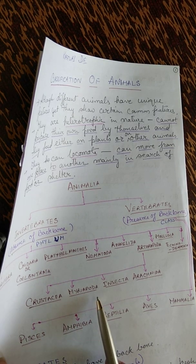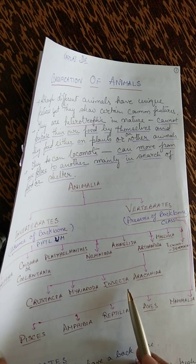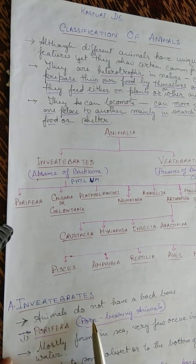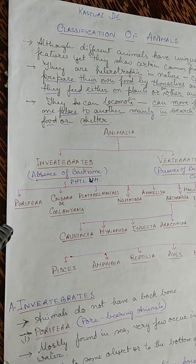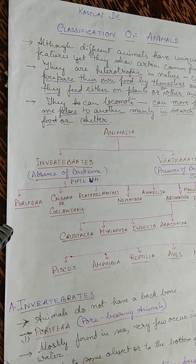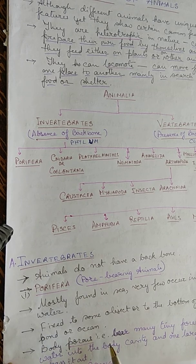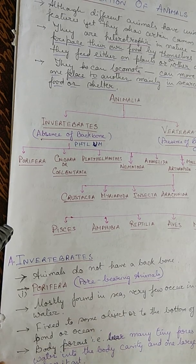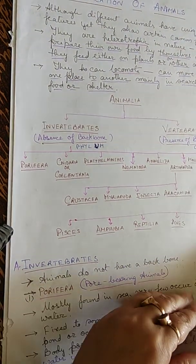The first phylum of invertebrates is Porifera, meaning pore-bearing animals. They are mostly found in the sea; very few occur in fresh water. They are fixed to some object or to the bottom of a pond or ocean. Their body is generally porous, bearing many tiny pores to draw water into the body cavity and one large pore to pass it out. For example, the sponge.